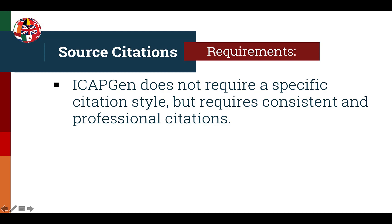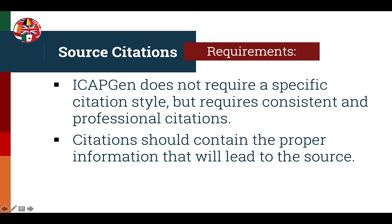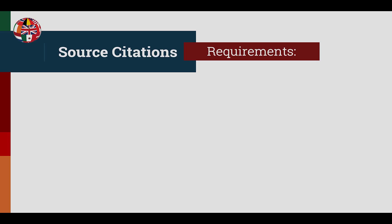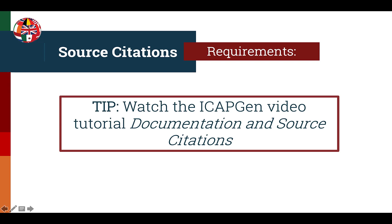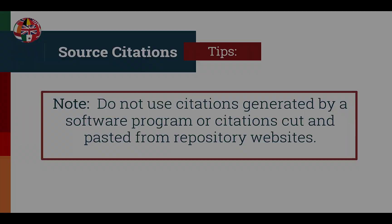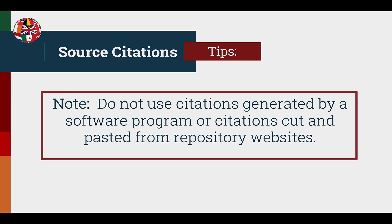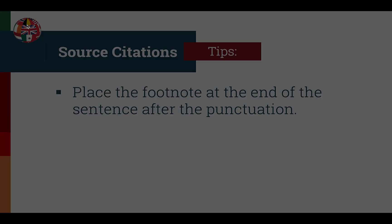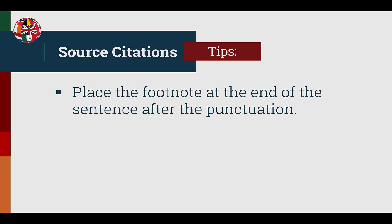As for source citations, ICAPGEN doesn't require a specific citation style, but requires that consistent and professional citations are used throughout all elements of the project. Citations should contain the proper information that will lead to the specific source being cited. Watch the ICAPGEN video on Documentation and Source Citations for a reminder of required citation elements, and refer to the Level 1 requirements listed in the Guide to Accreditation. It is strongly advised against using citations generated from software programs or cut and pasted from repository websites, as these are inadequate and will make it difficult to match them throughout other elements of the project.